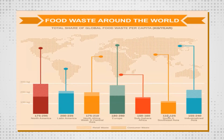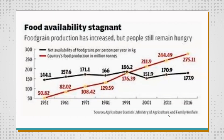As you see in the third graph, thanks to the Green Revolution, there has been a steady increase in food production, but unfortunately, the food has not reached the people concomitantly.